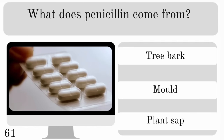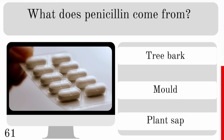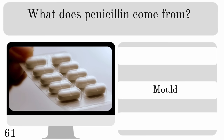What does penicillin come from? Tree bark, mould or plant sap? The answer is penicillin comes from mould.